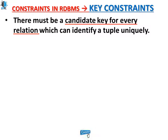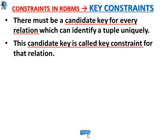Key constraints in DBMS: there must be a candidate key for every relation which can identify a tuple uniquely. A candidate key is a combination of primary key and alternate keys. An entity set can have multiple keys, but one of them must be the primary key. This is mandatory. The primary key contains unique and not-null values in the relational table and uniquely identifies each row.